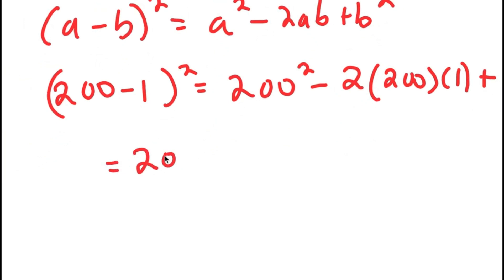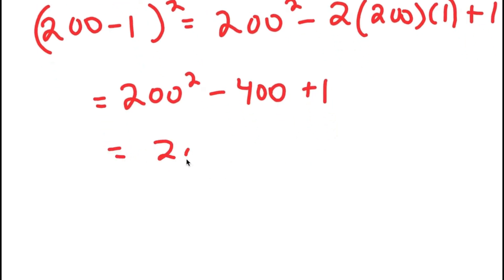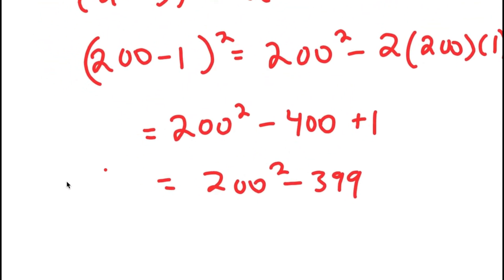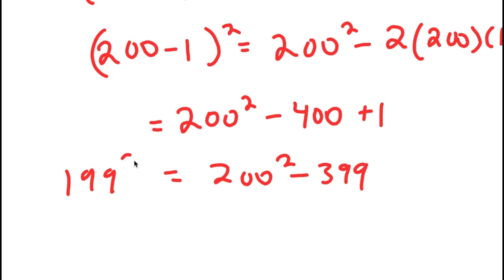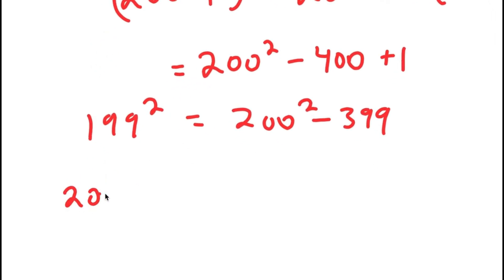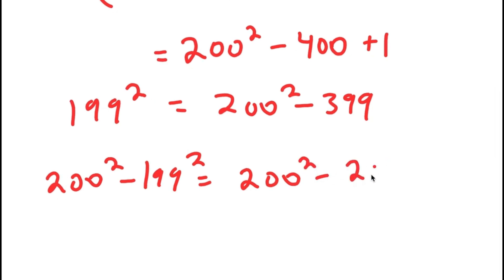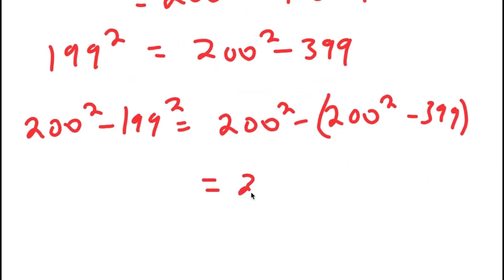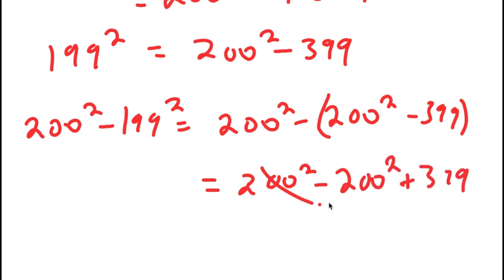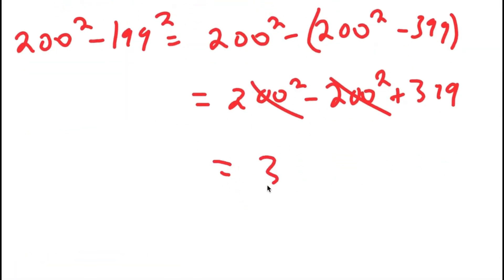And this is equal to 200 squared minus 400 plus one, which is equal to 200 squared minus 399. So this is the value of 199 squared. So 200 squared minus 199 squared equals 200 squared minus (200 squared minus 399), which simplifies to 200 squared minus 200 squared plus 399. These two cancel out, leaving 399.